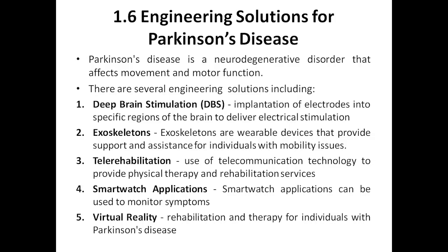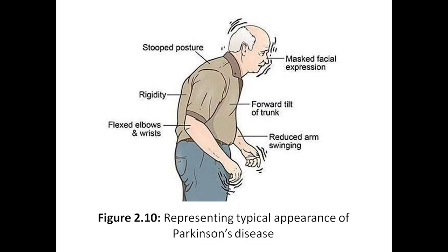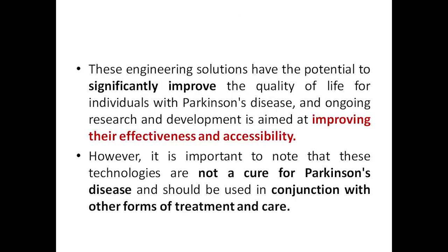These are the five engineering solutions for Parkinson's disease. The typical appearance of a Parkinson's disease patient includes a stooped posture, a masked facial expression, forward tilt of the trunk, rigidity in the back, flexed elbows and wrist, and reduced arm swinging. These engineering solutions have the potential to significantly improve the quality of life for individuals with Parkinson's disease, and ongoing research and development is aimed at improving their effectiveness and accessibility.